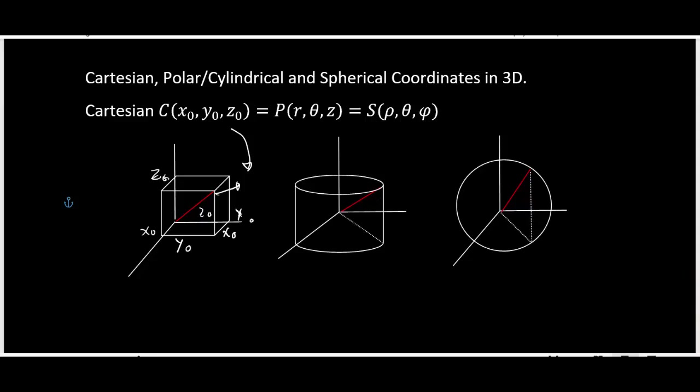Now when going to cylindrical coordinates, this comes from polar coordinates r and theta. We have the x-axis, y-axis, and z-axis. The angle from x to y is theta, and r is the radius. So the point can be called P(r, θ, z).